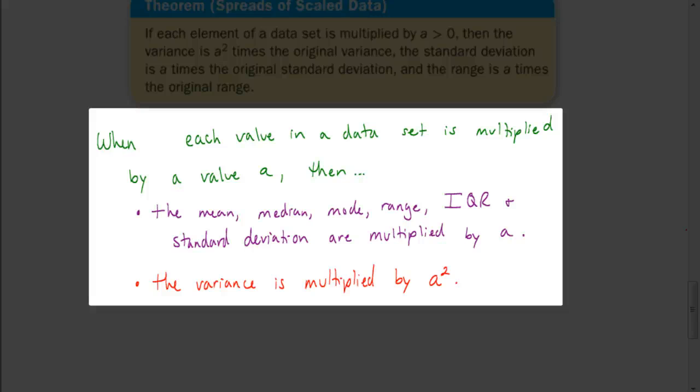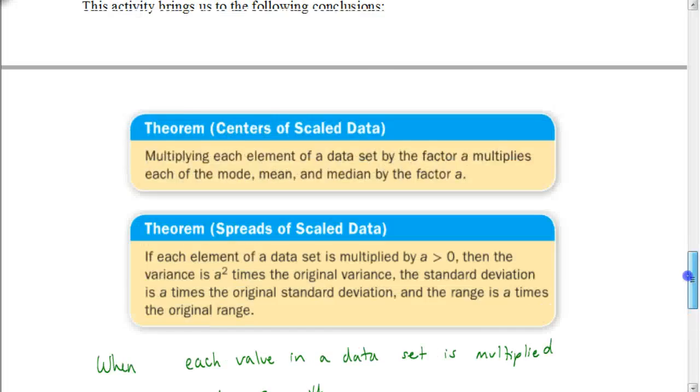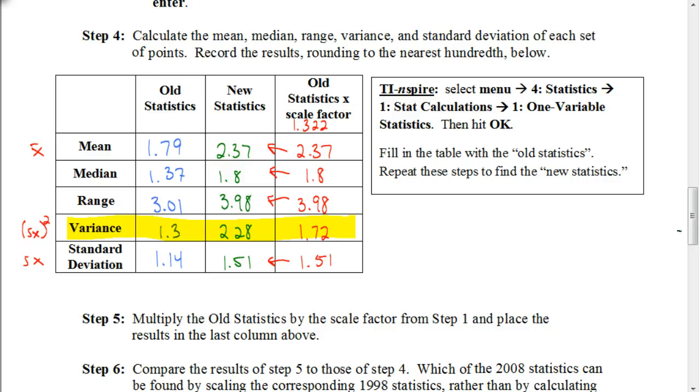The variance, however, is multiplied by a squared. So, in other words, going back up to our previous information here, if you took 1.3 times 1.322 squared, you get approximately 2.28. So, that is the best way to be able to come up with our new statistics, which we can just, instead of having to go through that whole process, we can just multiply the different values by whatever a was. With the exception of our variance, we just multiply by our original statistic there by a squared.